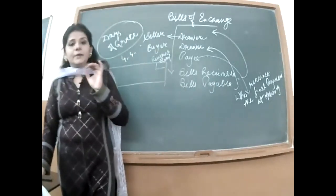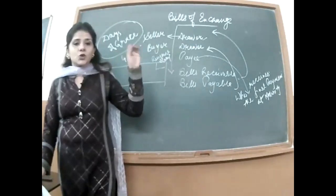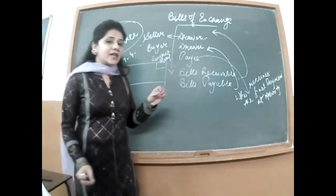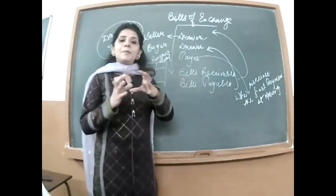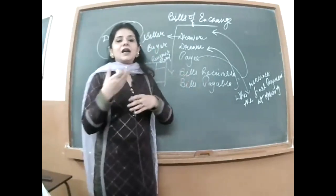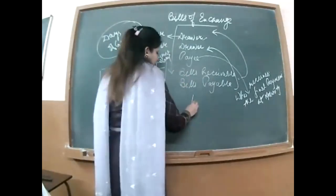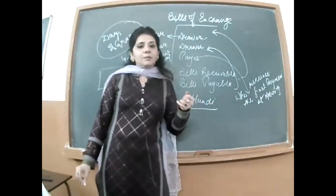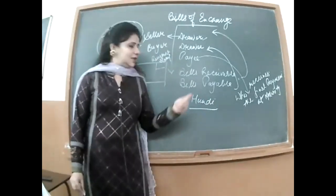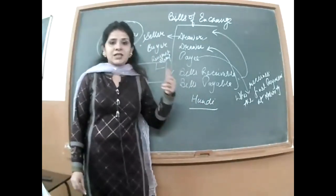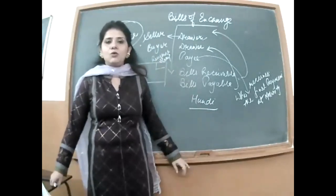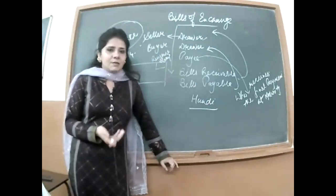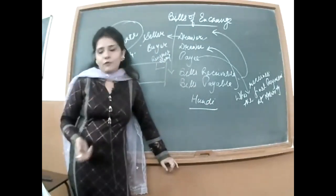Purane zamane mein, in the 60s and 70s and even during the British period, such documents were called hundis. Garib aur anpadh kisanon ke anguthe lagwaye jaate the — thumb impressions lete the — aur ultimately unki zameen harap kar li jaati thi. But nowadays it is a refined form. Aaj ke zamane mein Bills of Exchange hundis ki refined form hai.